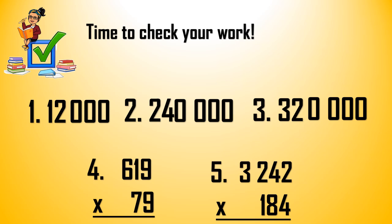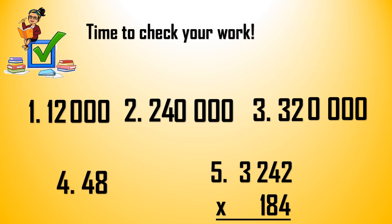How about number 4? It will become 600 times 80. So we multiply 6 and 8. 6 times 8 is 48. And how many zeros? There are 3 zeros. So the final answer is 48,000. If your answer for number 4 is 48,000, check for number 4.